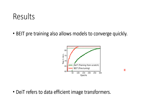BEIT pre-training also allows models to converge more quickly. An important aspect to note is that the number of epochs shown is for BEIT after fine-tuning, whereas for DeiT it is training from scratch. DeiT refers to Data-Efficient Image Transformer, which is another form of image transformer.